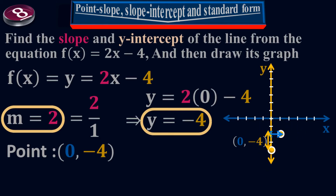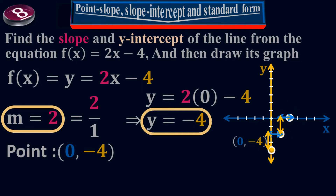Similarly, from the second point, rise is 2 and run is 1, giving the third point. Again from the third point, rise is 2 and run is 1, giving the fourth point. That's how we get multiple points along the line.